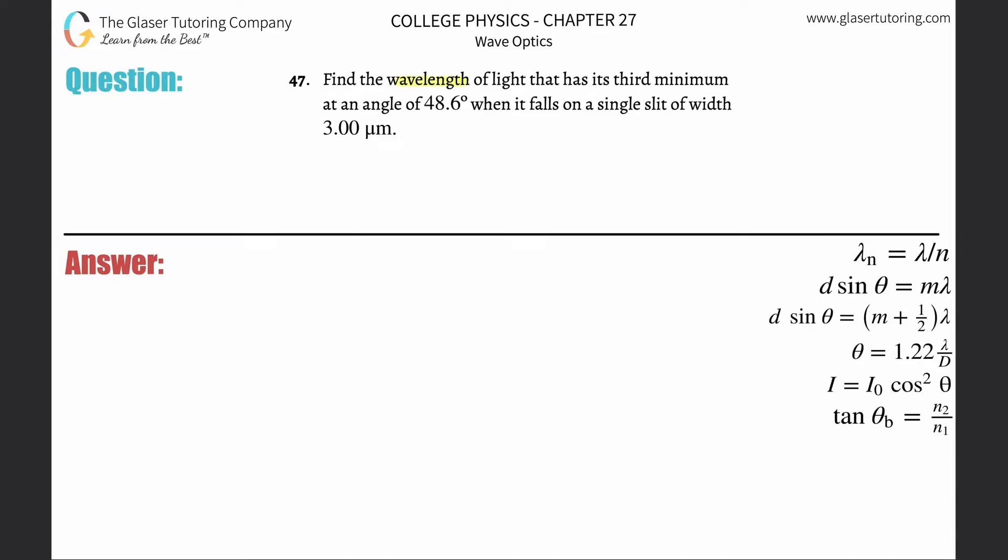Number 47: Find the wavelength of light that has its third minimum at an angle of 48.6 degrees when it falls on a single slit of width three micrometers. This is the formula we need to use again.